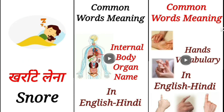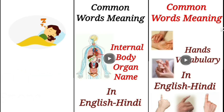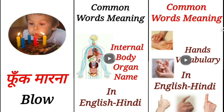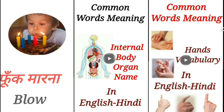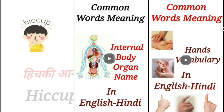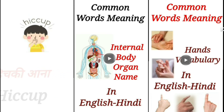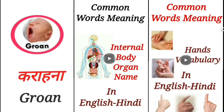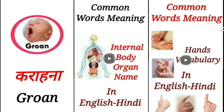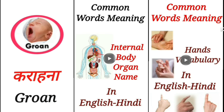Karate lena – Iska English is Snore. Phook maarna – Iska English is Blow. Chkia na – Iska English is Hiccups. Karha na – Iska English is Groan.